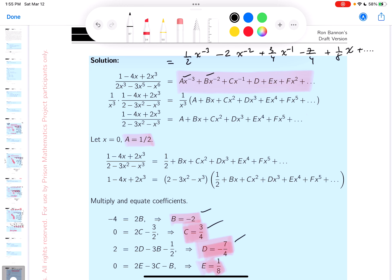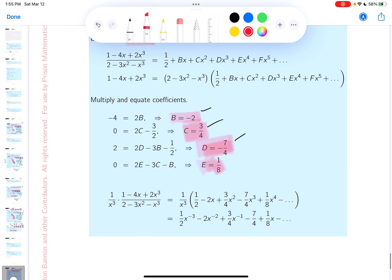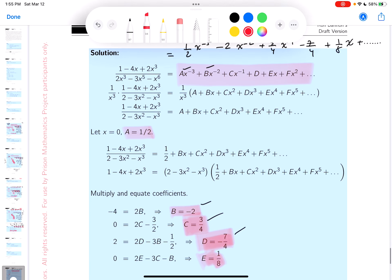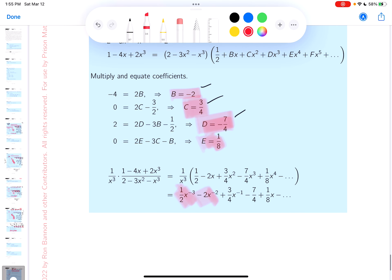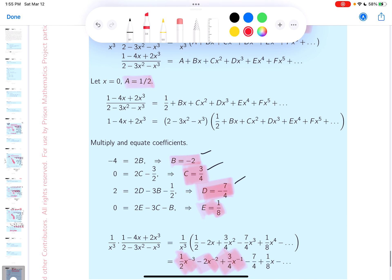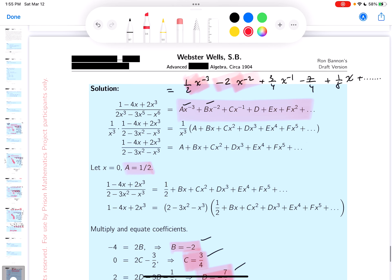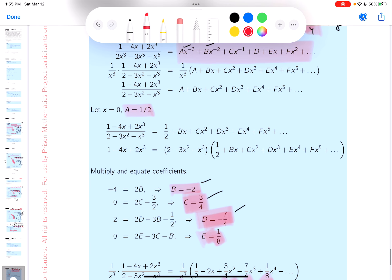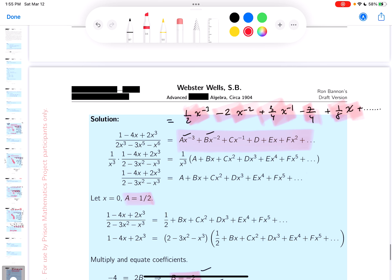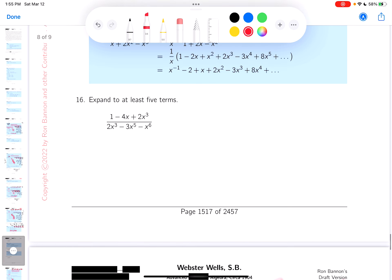And by the way, this is yada yada yada, it goes on forever. Let's get out the key. I'm going to look at it one term at a time. Do they have one half x minus three? Yep. Do they have minus two x minus two? Yep. Do they have three quarters x minus one? Yep. Minus seven quarters? Yep. And one eighth of an x? Yeah, they do. And it goes on forever, by the way. They just want you to get five terms.